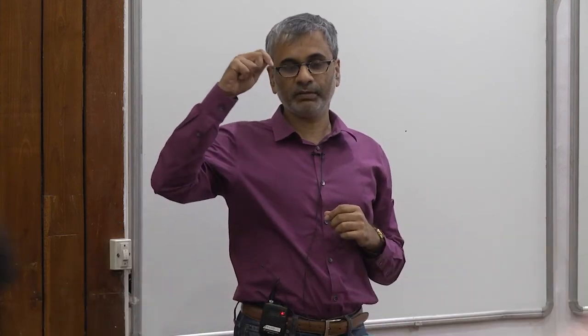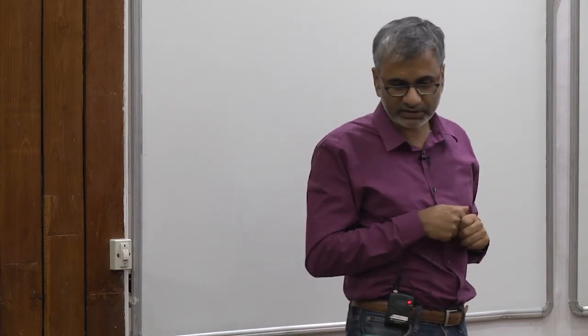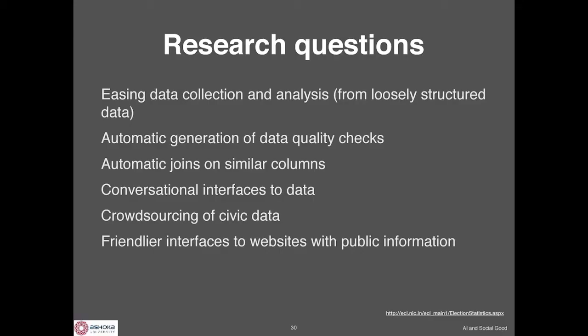What if you had tools that do data mining and anomaly detection to figure out that two people from the same party can't contest in the same election in the same year in the same constituency? Or can you join similar columns — I have a Lok Sabha dataset and an Election Commission dataset that are mostly the same but differ in spelling or other ways.